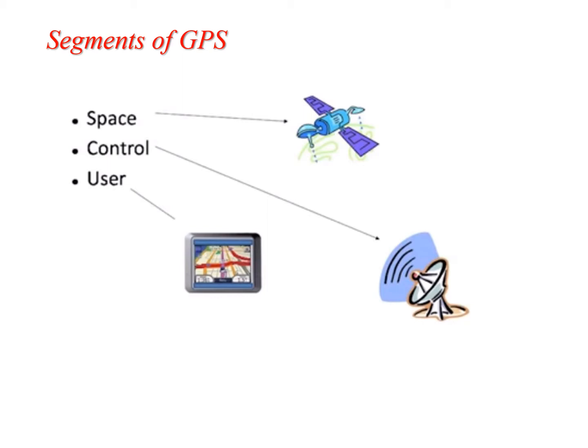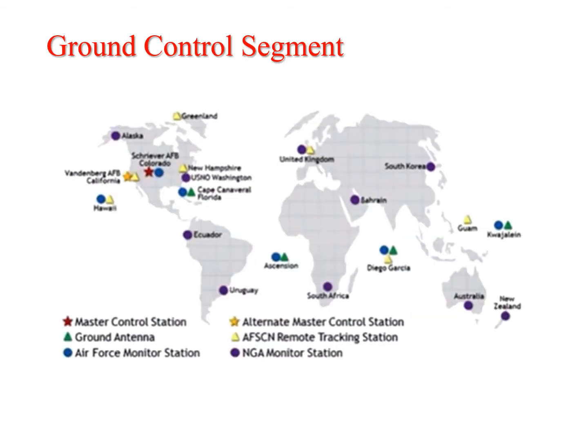So far we have studied the different segments or components of GPS. To take a quick review: the space segment is mostly related to the satellites and their orbital paths. The control segment consists of ground station points which have antennas continuously receiving signals from the satellites, correcting them, and sending the corrected signals back to the satellites. The third is the user segment.